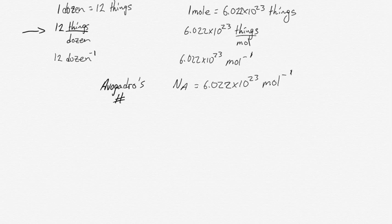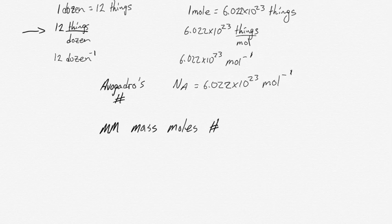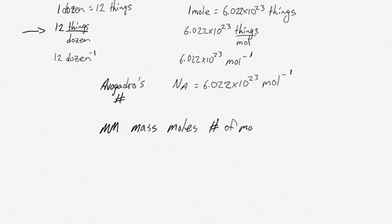Avogadro's number gets the symbol NA. This is really important information because it lets us calculate and interconvert between things like molecular mass, mass, moles, and number of molecules.